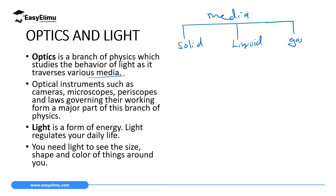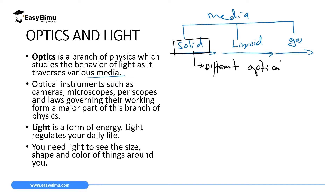What we are going to focus on in optics is how light behaves when it moves from solids — one media — to liquid — another media — to gas, yet another medium. What we realize is that when light travels in one media like solids, it will travel differently in different solids, since different solids have different optical density. Different liquids and different gases also have different optical density.